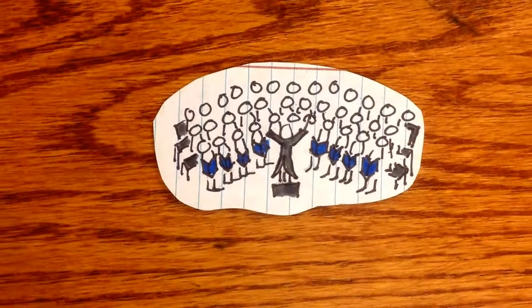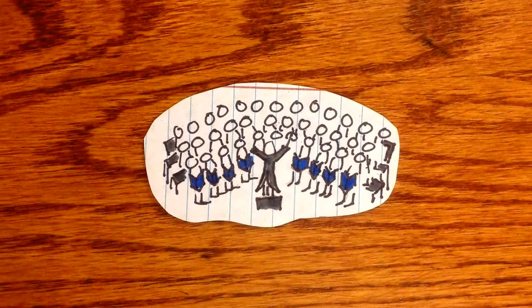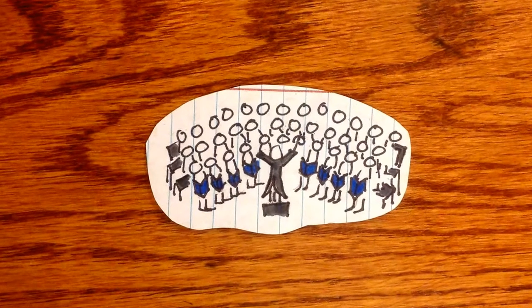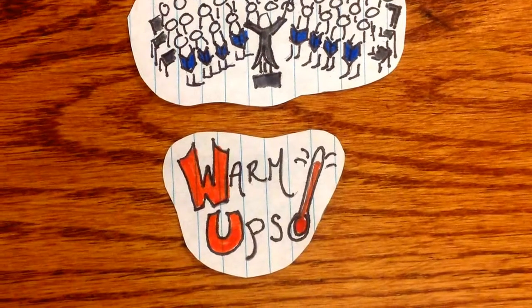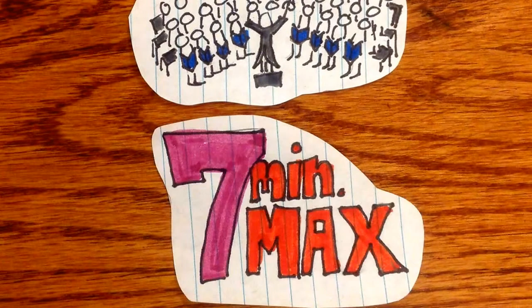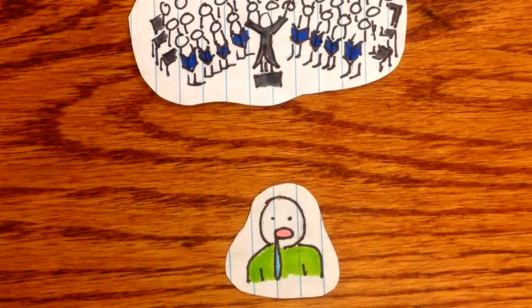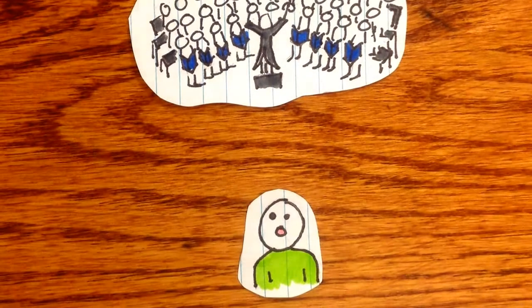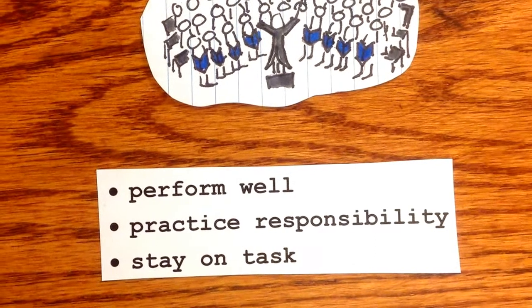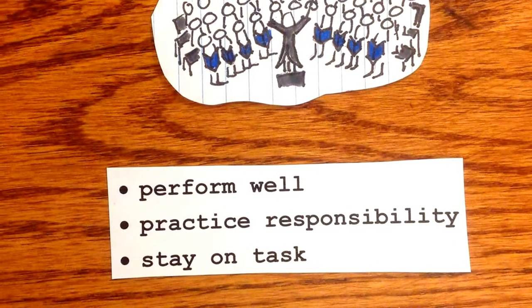Choirs are extremely beneficial to a child's musical development, as well as fun. From the teaching standpoint, it is important to select age-appropriate repertoire, making sure the songs aren't too babyish, yet not too difficult in style and vocal range. Rehearsals should occur at least once a week, beginning with warm-ups and vocal exercises, and working on each piece for a maximum of seven minutes — because really, what eight-year-old wants to sing the same song for half an hour? Their attention span simply won't allow for it. With choirs, students are driven to perform well, practice responsibility, and stay on task toward the end goal.